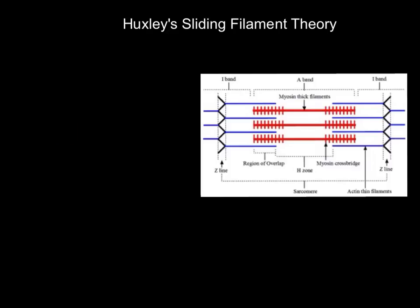The smallest contractile unit is a sarcomere. We have what we call a Z line — this black zigzag line — and everything between those two Z lines is called a sarcomere. For now, forget the H zones, A bands, and I bands, and concentrate on a couple of key things.